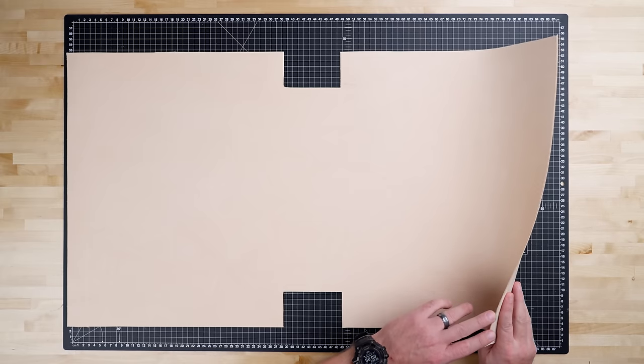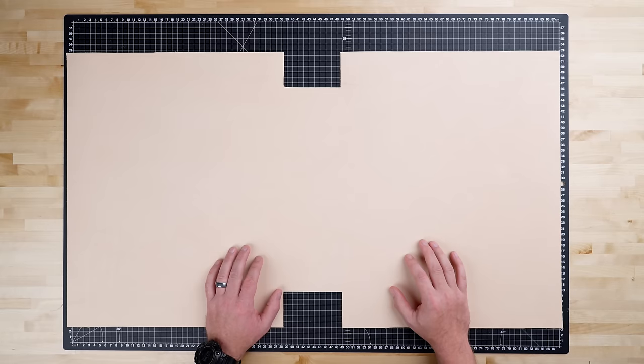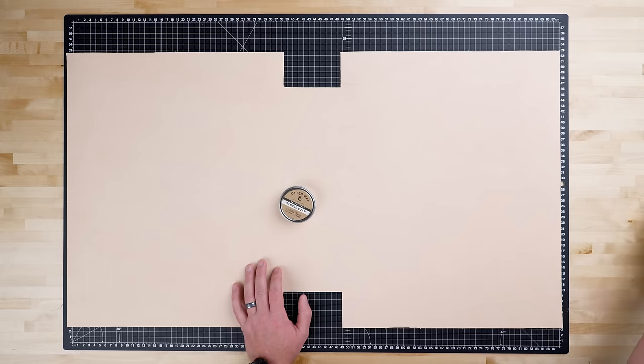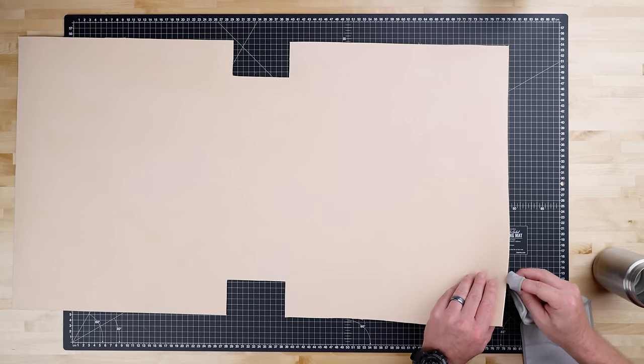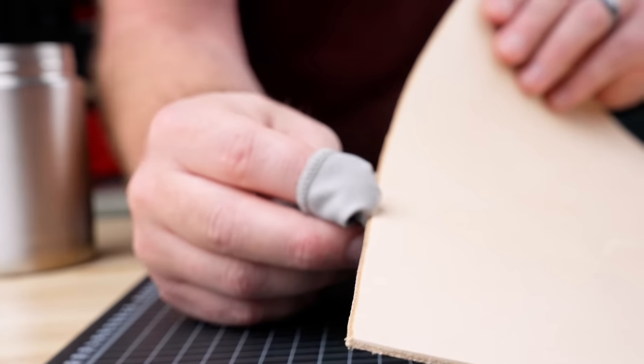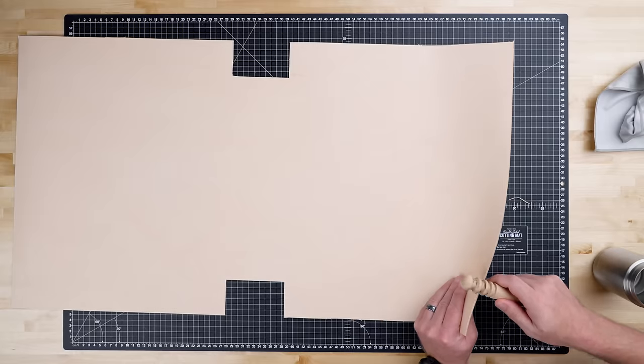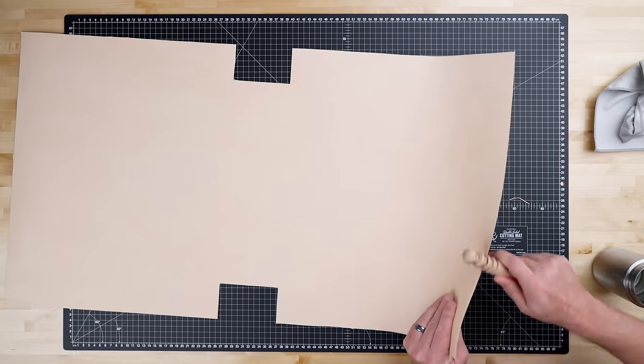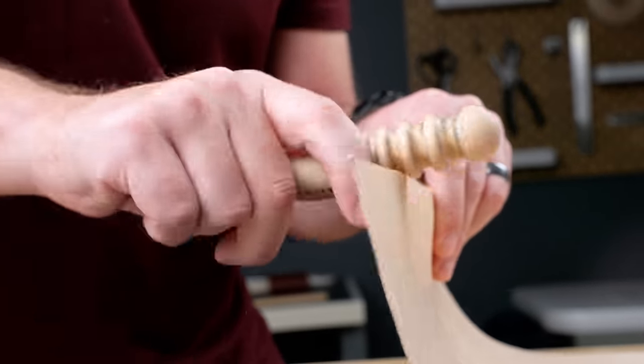Next, we're gonna burnish our top and bottom edges. This will make our edges smooth, which gives the bag a more finished look. We're gonna use water, saddle soap, and a hand burnisher. I'm first gonna use water. When putting water on the edge, try not to get any on the grain side. It may leave a stain when it dries. Now we're gonna do a quick burnish. You don't need to push down hard. Let friction do the work.